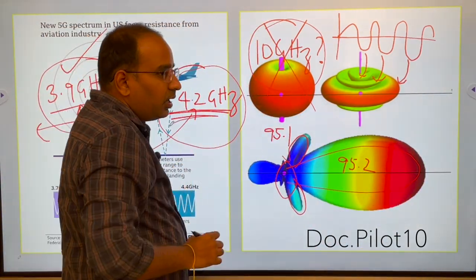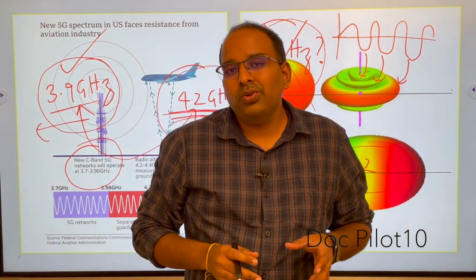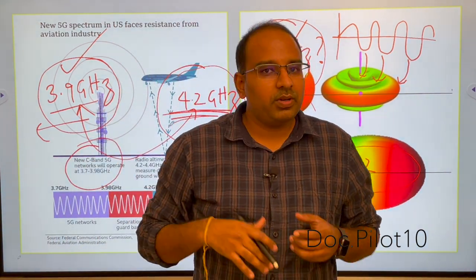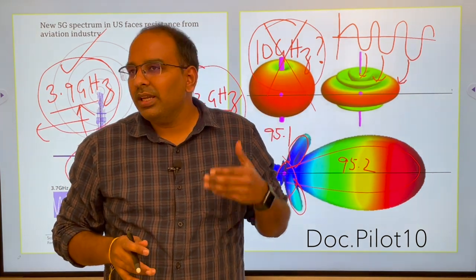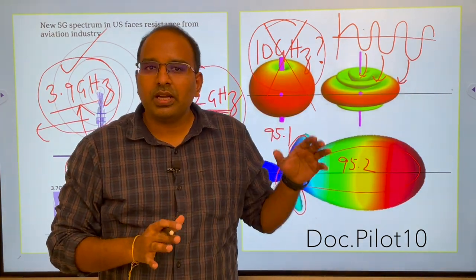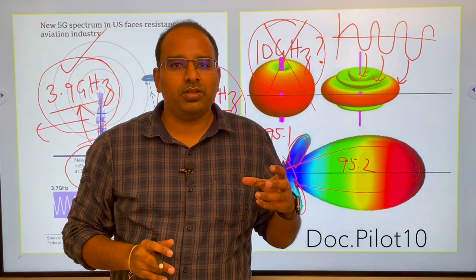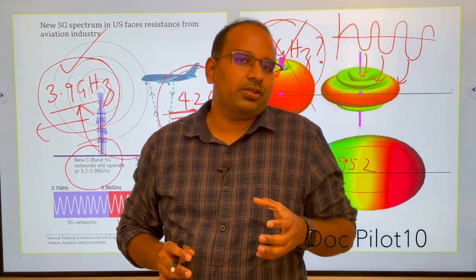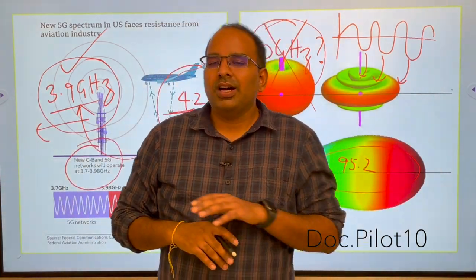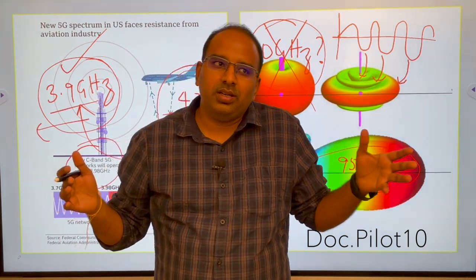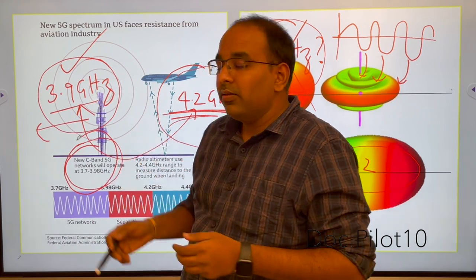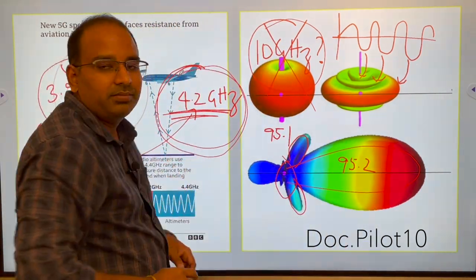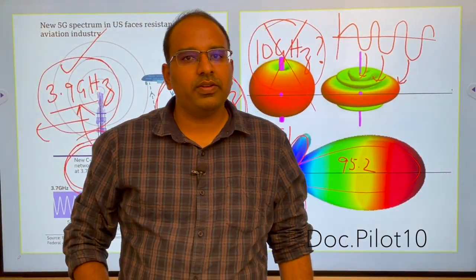Now the question is why not aircrafts change their frequency? Why not increase or decrease the frequency of radio altimeters? Yes they can do, they should do it because now it is occupied by 5G. But the problem is getting an approval, changing every aircraft instrument on every aircraft mechanically is a time-taking process. It will take at least 8 to 10 years. So this is the problem that is going on. I'm also eagerly waiting what is going to happen. Will they change the frequency band or will they speed up changing the radio altimeters on the aircraft? Let's wait and see. Hope you understood everything.